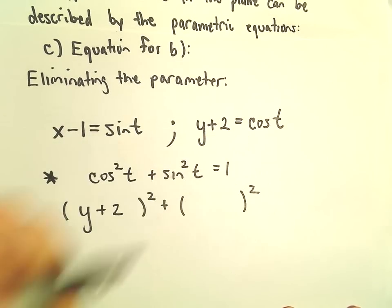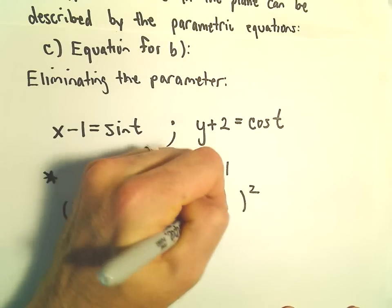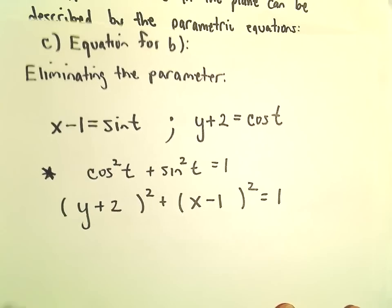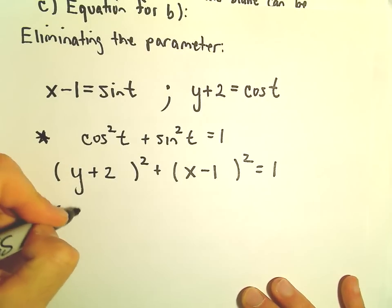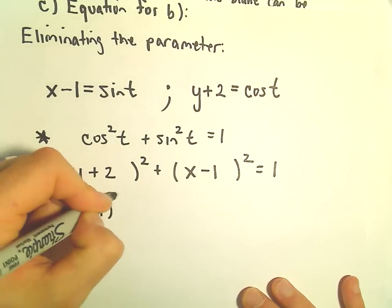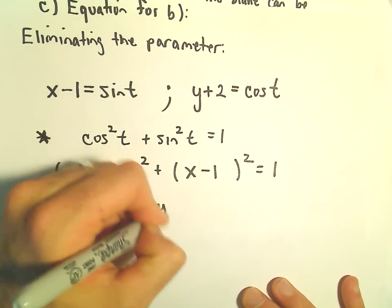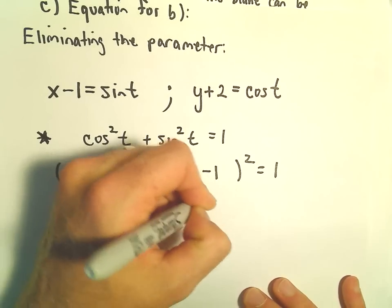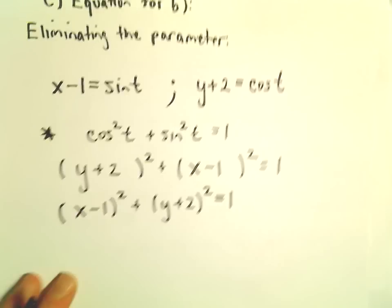We've got sine squared, which is x minus 1. That equals positive 1. I'm not really going to do anything here. This is x minus 1 squared. I'm just going to reorder it: x minus 1 squared plus y plus 2 squared equals 1.